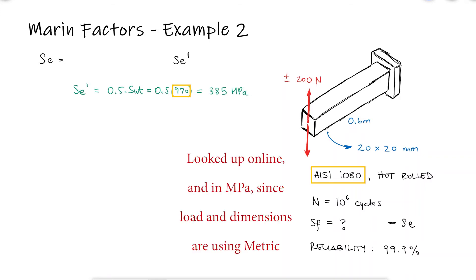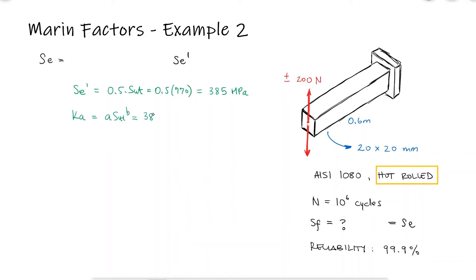Since the surface is not completely polished because the rod is hot rolled, the coefficients for the surface factor Ka will be those for a hot rolled material in megapascals. The size factor Kb is calculated in terms of the diameter of the part.